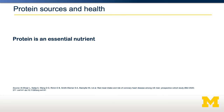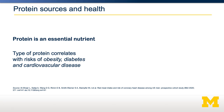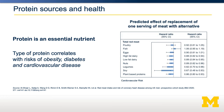Protein is an essential nutrient, but the type of protein you get really matters. The type of protein correlates with the risks of obesity, diabetes, and cardiovascular disease. Shown here on the right is the effect of replacing an equivalent amount of red meat with other protein sources, and how it affects cardiovascular disease risk in an observational study. You can see that replacing one serving of red meat with eggs, nuts, or plant-based proteins reduces cardiovascular disease risk by about 20%.